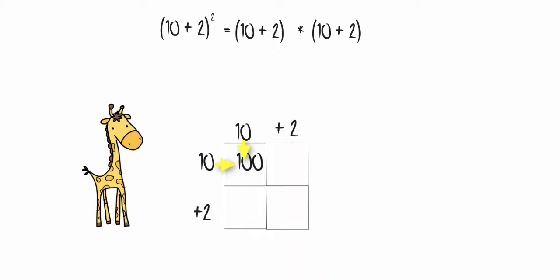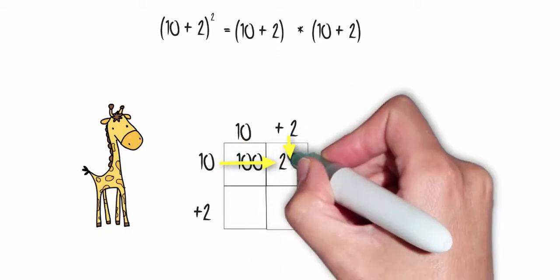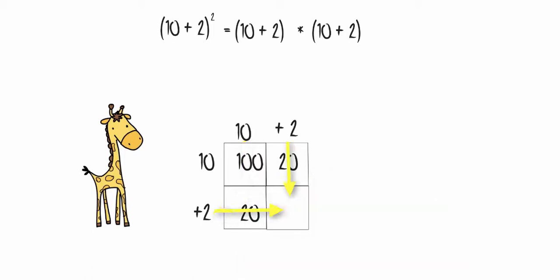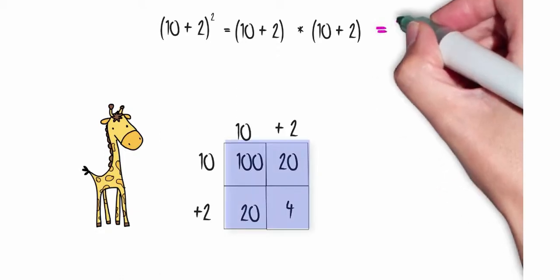10 times 10 is 100, 10 times 2 is 20, 2 times 10 is 20, and 2 times 2 is 4. To get my final answer, I need to add up all the numbers in the boxes, and I'll get 144.